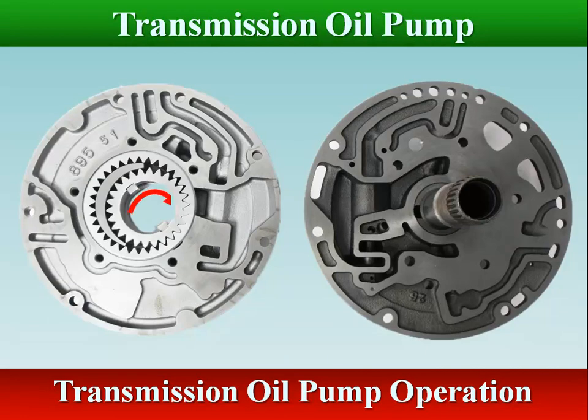As the gears rotate in a clockwise direction, a low pressure develops on the inlet side of the pump as the gear teeth move away from each other. On the other end of the crescent, the gear teeth come together forcing the fluid through the outlet.